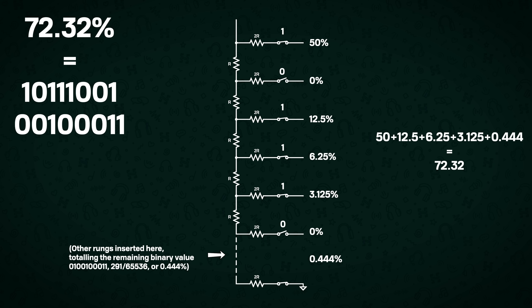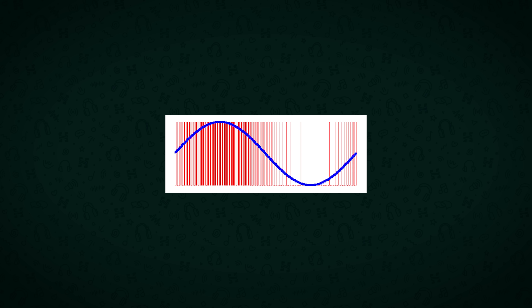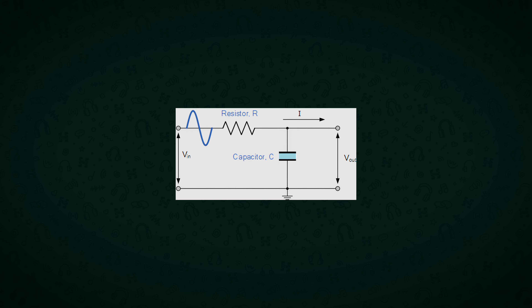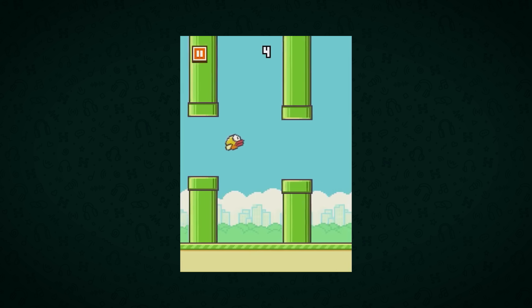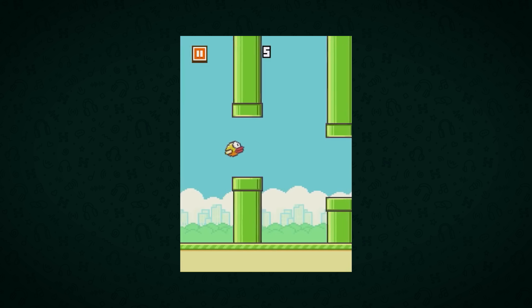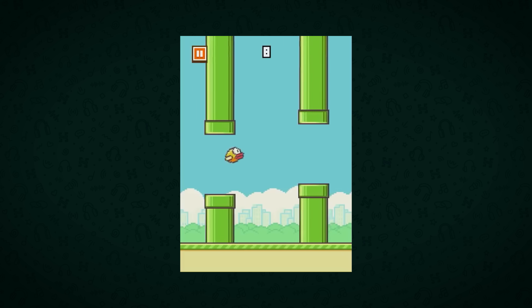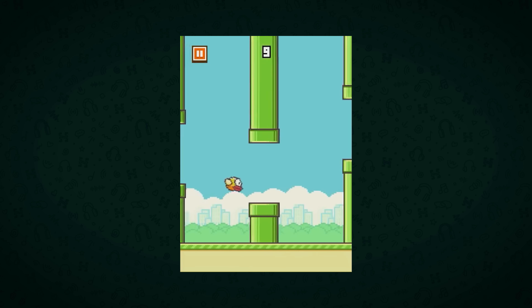To get 72.32% of your max voltage out of an R2R ladder, you do what we just described. To get 72.32% out of a 1-bit delta sigma converter, you switch from full 100% output to 0% output millions and millions of times, with it being at 100% for about 72.32% of the time and 0% for the rest. When you take this series of extremely high-frequency pulses and apply a low-pass filter to remove all of the high-frequency switching noise, what you're left with is the intended analog signal. Just like in Flappy Bird, if you want to get to a gap that's about halfway up the screen, you tap the screen about half of the time — and the low-pass filter effect is just the fact that the bird doesn't move up instantaneously.